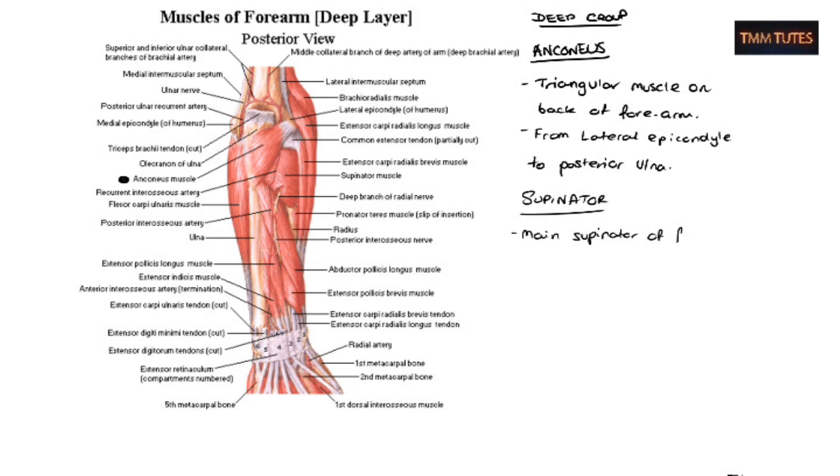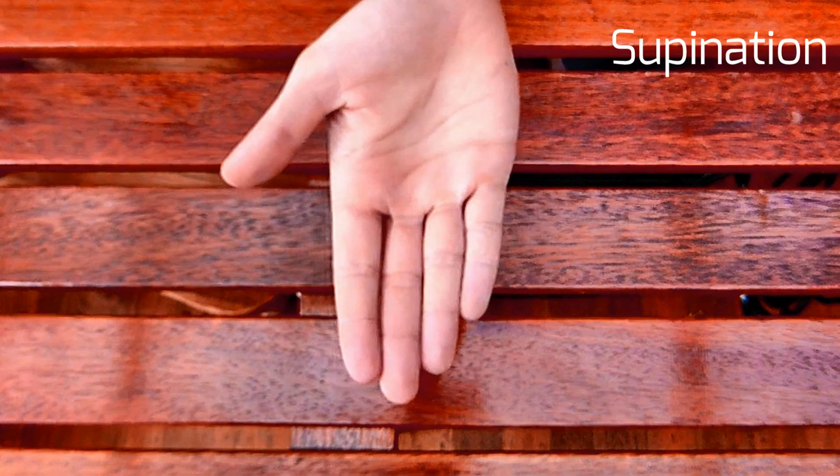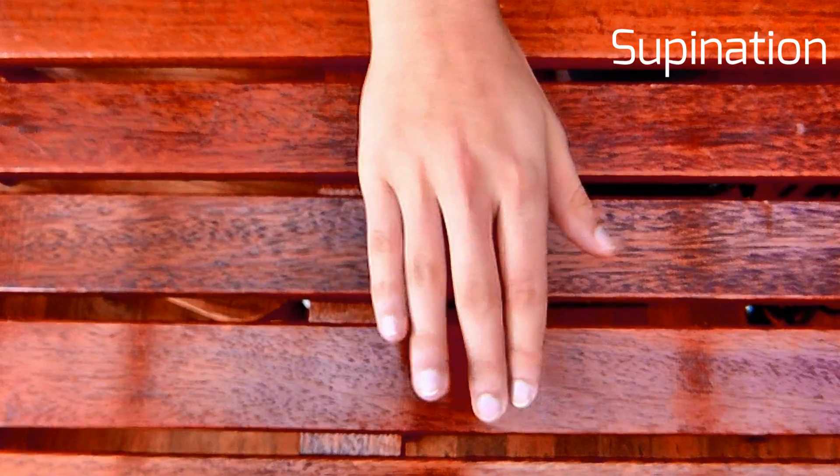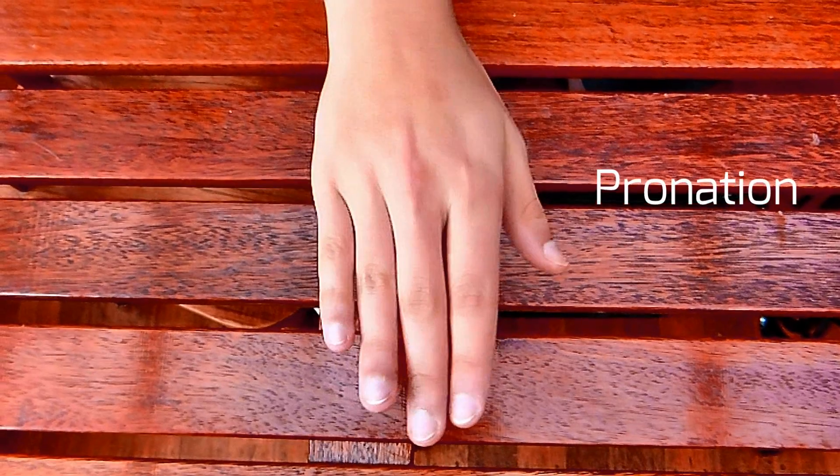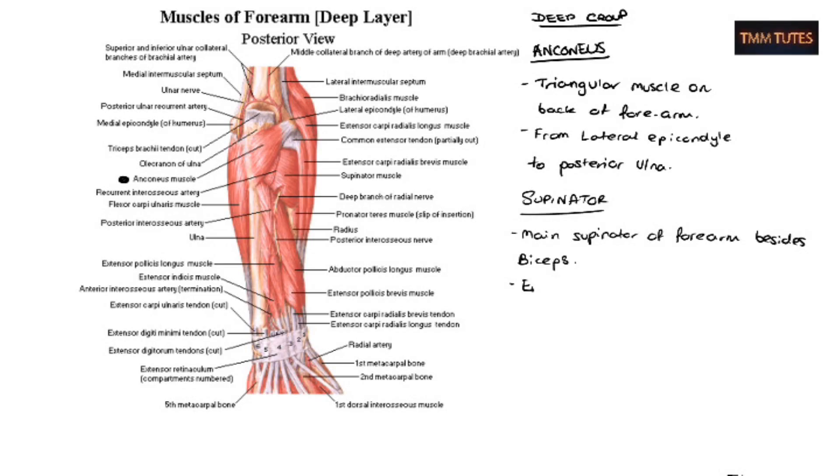So supinator is the main supinator of the forearm besides biceps. So supinator is when you open your palm out for like a hand bowl of soup and pronation is when you pour the soup out. Pro pour close enough.